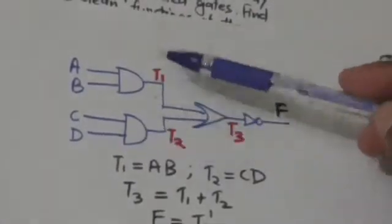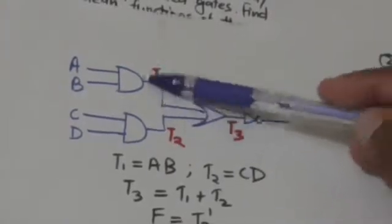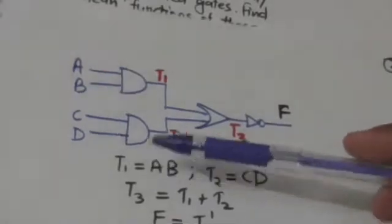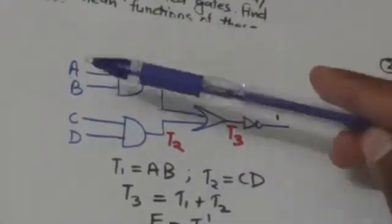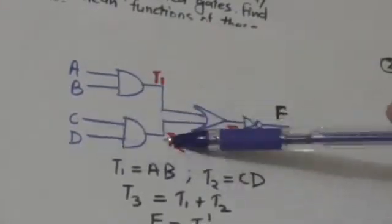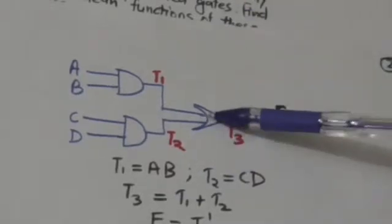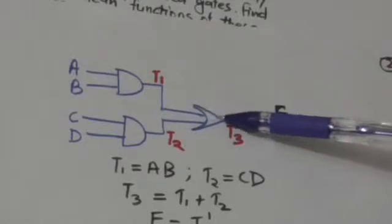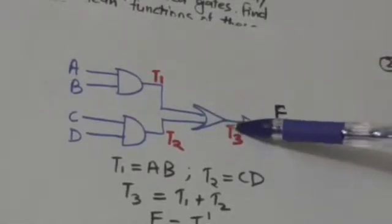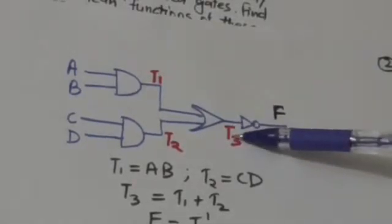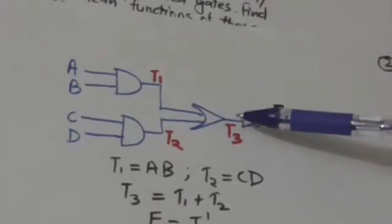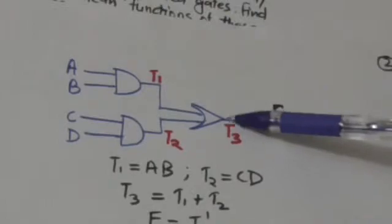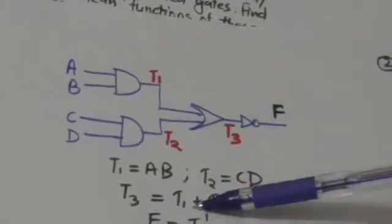First, I have labeled the outputs of these two AND gates as T1 and T2. The boolean functions are: T1 equals A AND B, and T2 equals C AND D. Now I have labeled the output of this OR gate by the symbol T3.